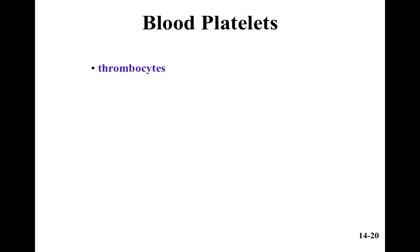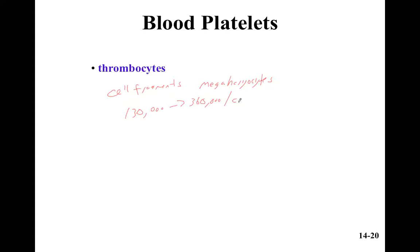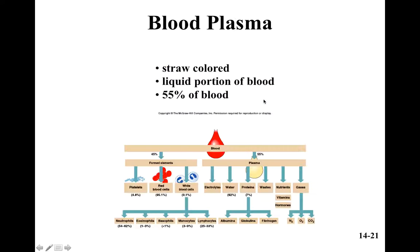Blood platelets are called thrombocytes. These are cell fragments of those megakaryocytes. They look very small under the microscope — 130,000 to 360,000 per cubic millimeter. The platelets are there to help control blood loss from broken vessels.